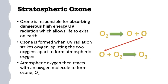Ozone is going to be formed when UV radiation actually strikes oxygen molecules, which is O2, and splits that oxygen molecule into two atmospheric oxygens, or single O atoms. Notice that that atmospheric oxygen then reacts — follow the red arrow down on the right — it's going to react with O2 to form O3, which is the ozone molecule.